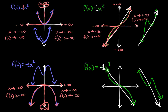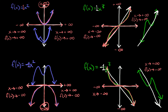And lastly, for f(x) = -x³, as x approaches positive infinity, the whole graph is sloping down towards negative infinity, so the function approaches negative infinity. As x approaches negative infinity on the other side, the function is going up towards positive infinity. So the function approaches positive infinity on that side.